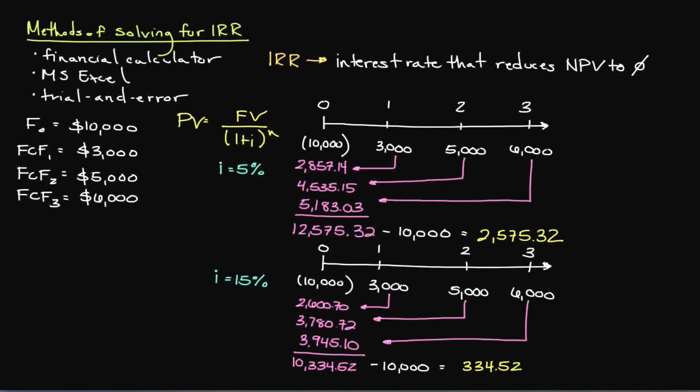We already determined the NPV twice using 5% and 15%, giving us NPVs of $334.52 and $2,575.32 respectively. In our first step, we're going to subtract our lower NPV from our higher NPV. This will give us $2,240.80. Second, we're going to divide this figure by the difference of our two interest rates. Since we're using 5% and 15%, we'll divide by 10 as 15 minus 5 equals 10. This will give us a value of 224.08.